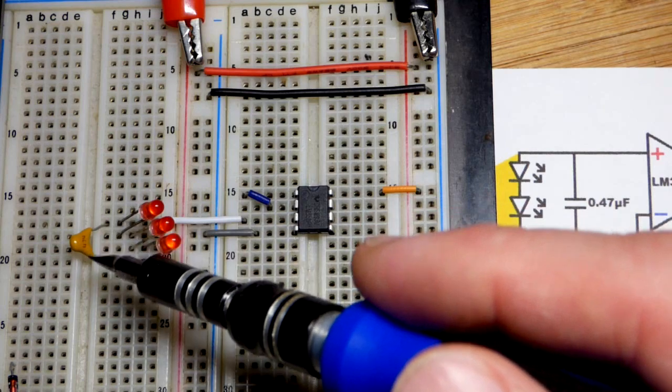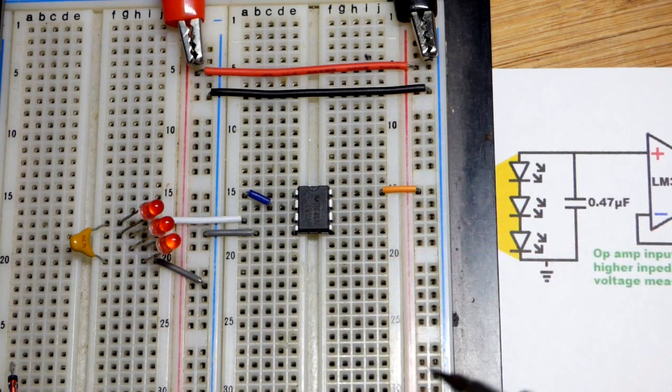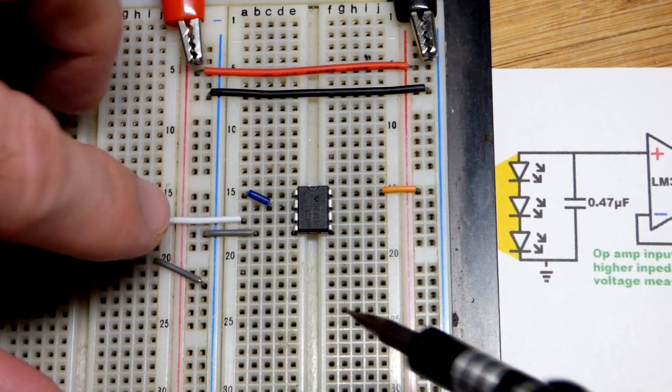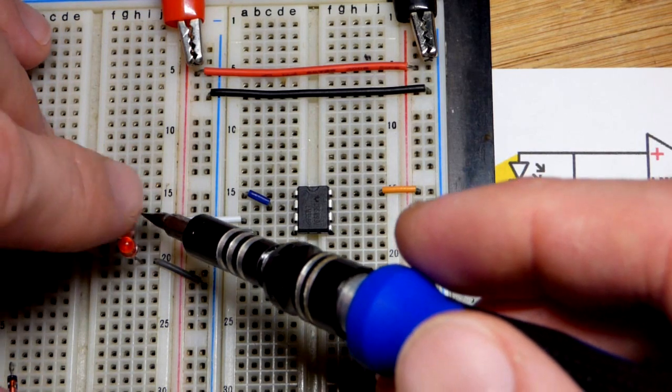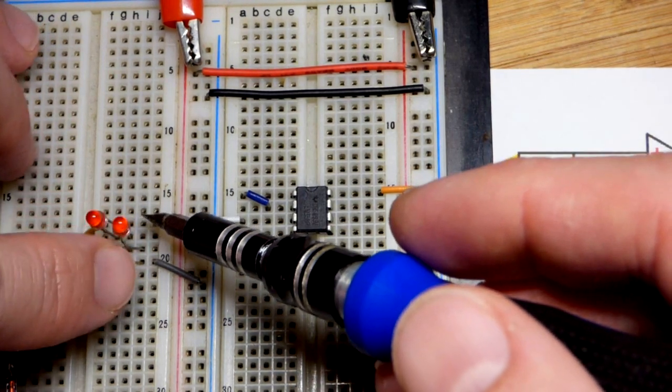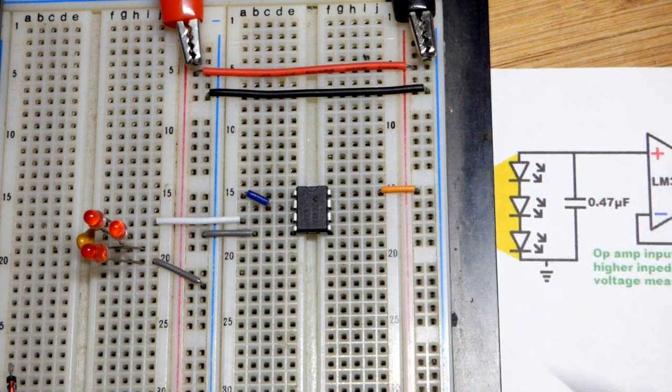But that doesn't help charge or discharge it. So they're charging the capacitor there. It's a 47 microfarad capacitor. You can use a low-value capacitor. In any case, the top of this, I know it's kind of clustered there, is headed over to the non-inverting input.